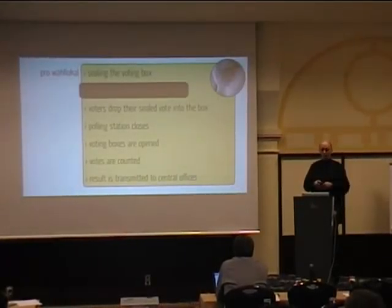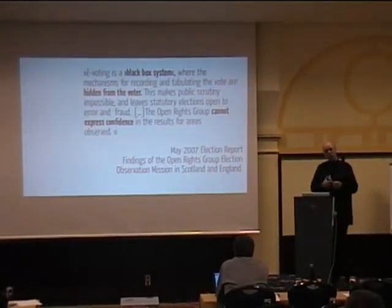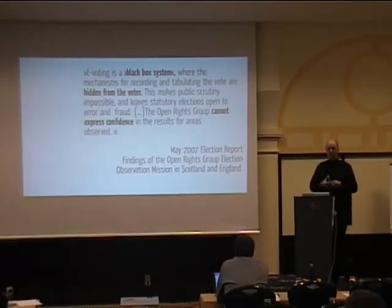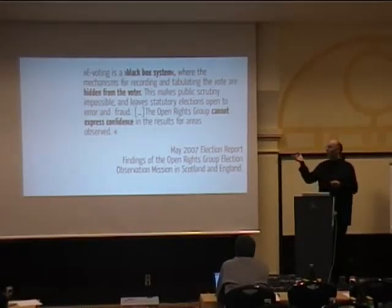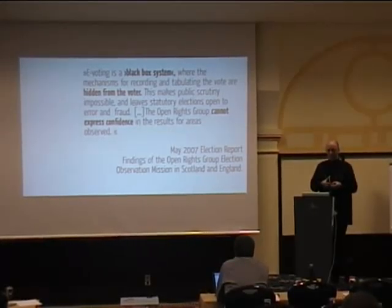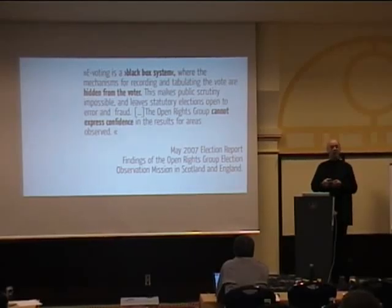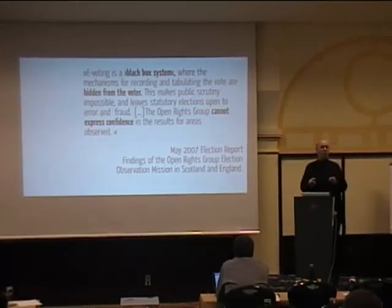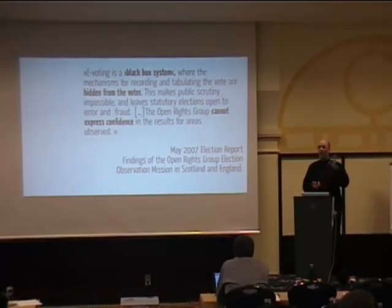Compared to the paper process, you see there is a problem. E-voting is a black box system where the mechanisms for recording and tabulating the vote are hidden from the voter — and not only from the voter, hidden from anybody who wants to watch. This makes public scrutiny impossible and leaves statutory elections open to error and fraud. The Open Rights Group, observing a May 2007 election in England, found it wasn't going very well. They could not express confidence in the results for areas observed, because you cannot observe. You can sit there and see a little counter go upwards on the voting machine, but have no way of seeing whether anything was tampered with. You can believe it, you can trust it — and there's that word 'trust' again. We have to trust these machines.